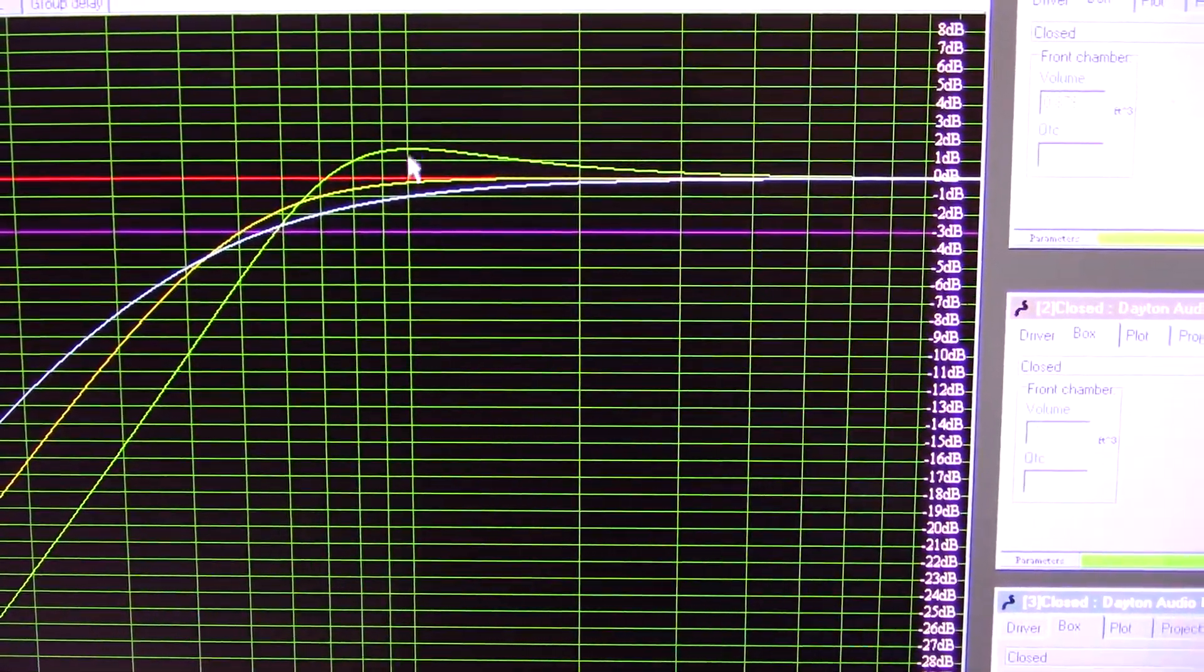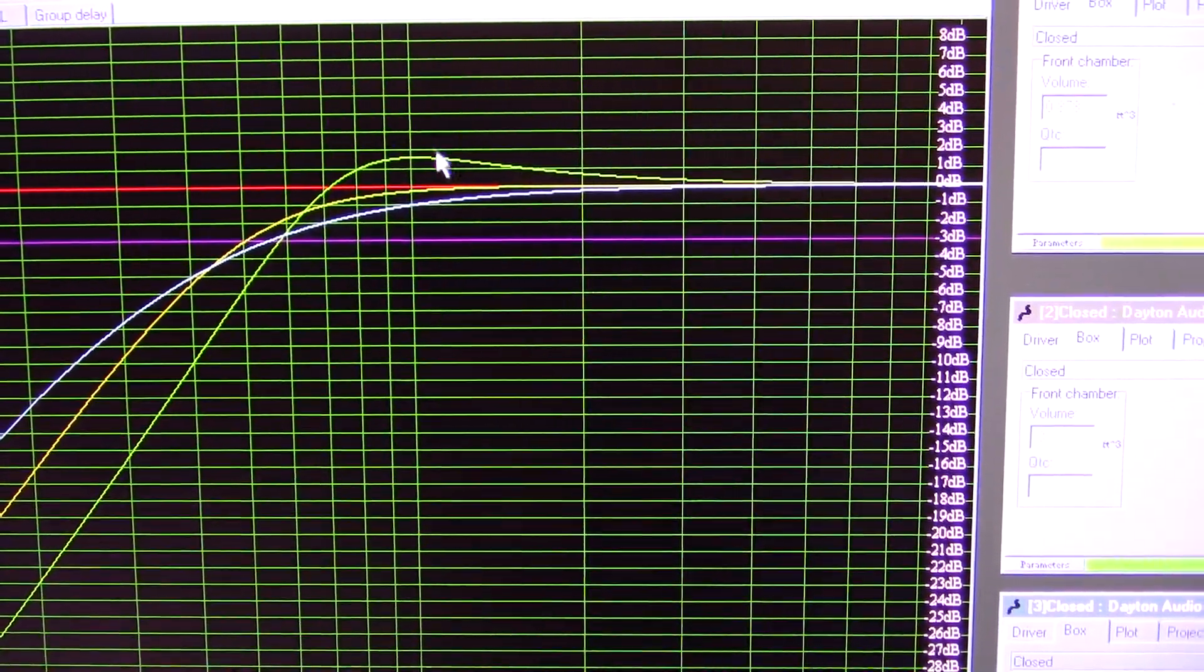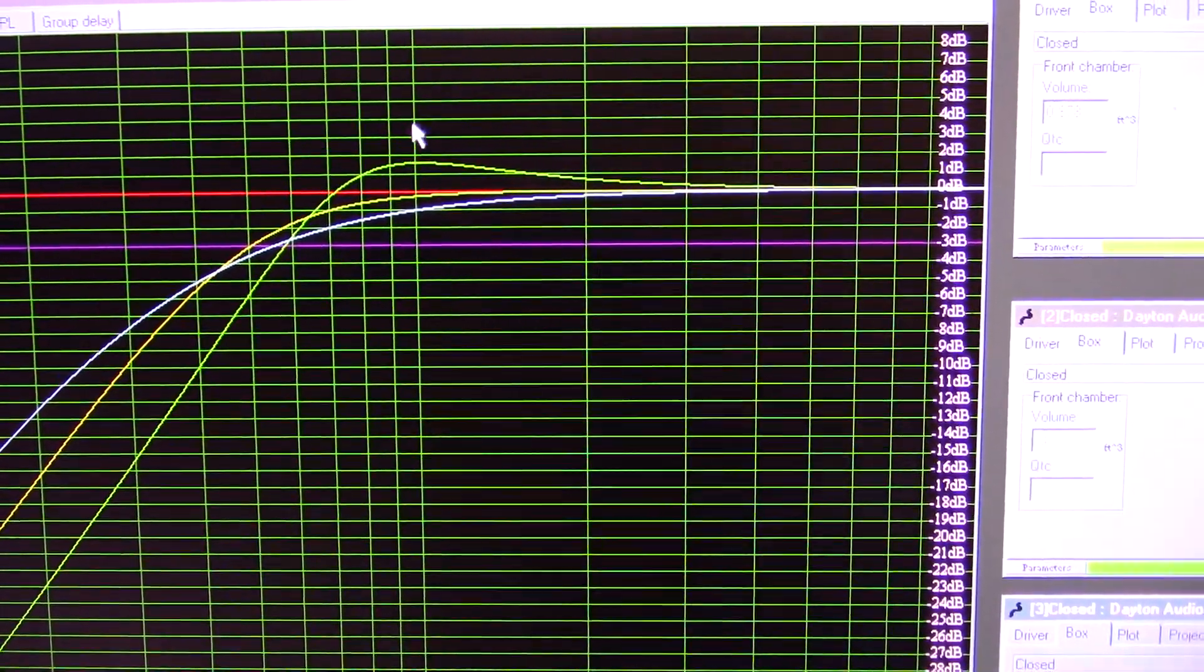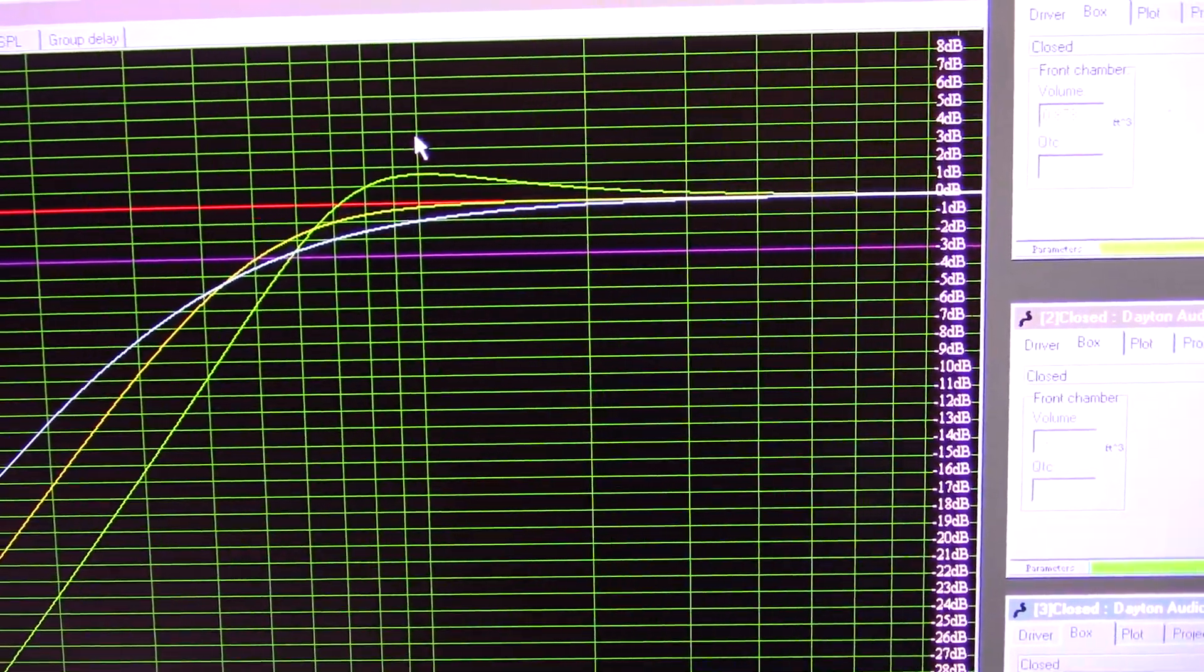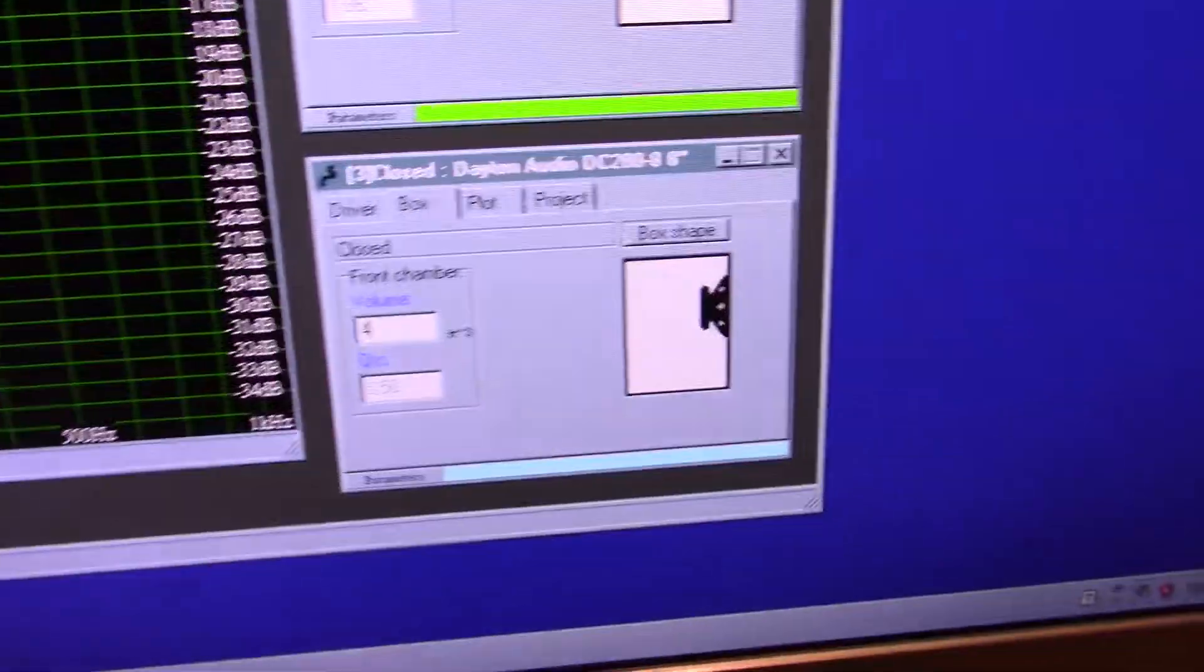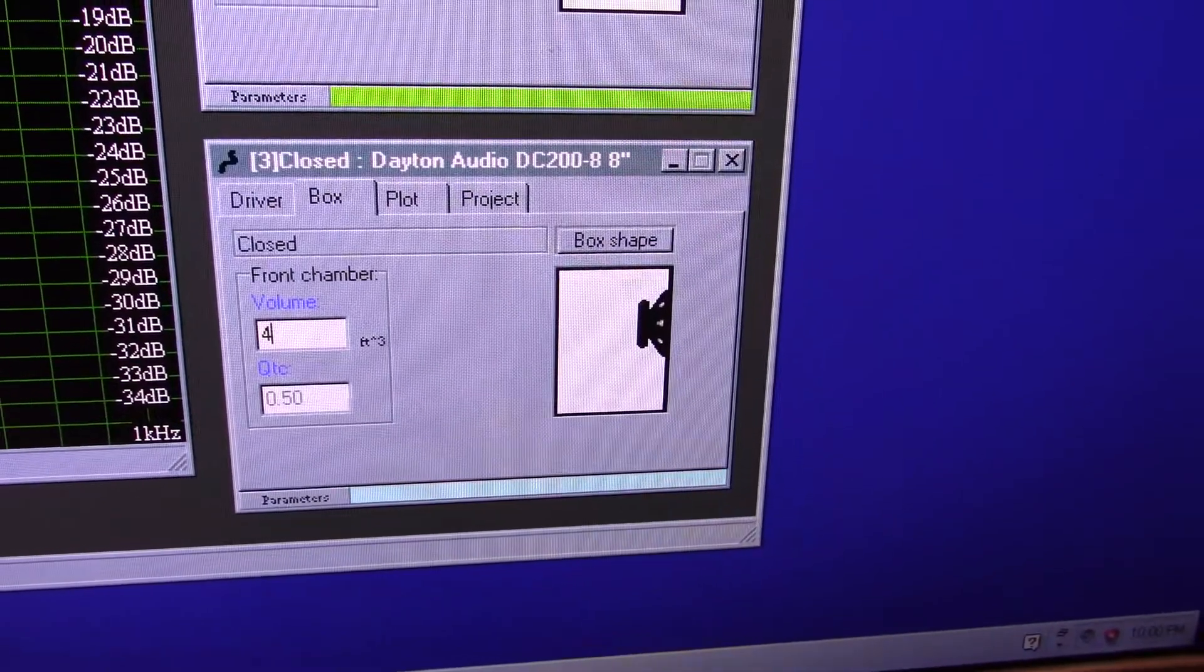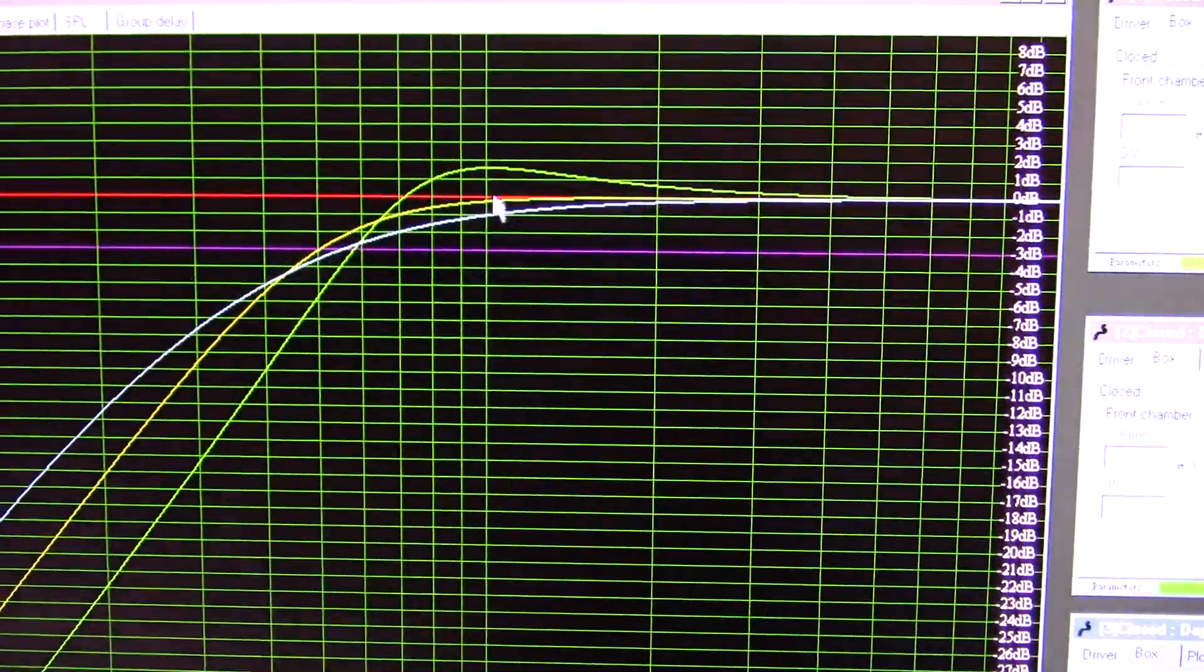And if you make the box too small, of course, this becomes even worse. And this peak becomes higher. And you end up with what I call a boxy sound. With this driver, we're getting a peak around 100 Hz. And that's where you get that boxy sound. I just don't like that. Okay, so, then, the other scenario is to go with a very low QTC of 0.5. And that requires a ridiculously large box.